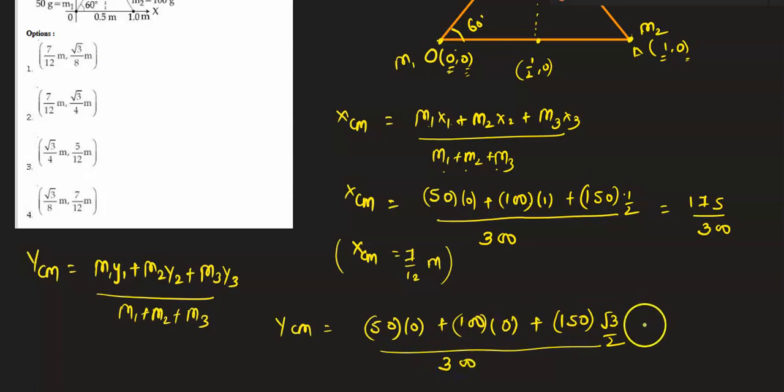From here, I will get the coordinate ycm as 150√3 upon 600. After simplifying, I will get ycm as √3/4. So the center of mass for this given system is (7/12, √3/4) meters. If we look at the options, then option 2 will be the correct one.